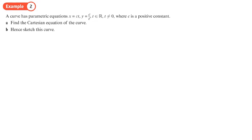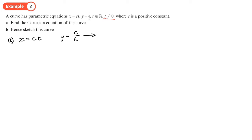A curve has parametric equations x equals ct, y equals c over t, where t can be any real number except t cannot equal 0 — otherwise we would end up dividing by 0 — and c is a positive constant. Find the Cartesian equation of the curve. It's the same method as before: make t the subject of one equation and substitute into the other. We've got x equals ct and y equals c over t. It makes sense to make t the subject of the y part. A little tip: whenever you have an equation like y equals c over t, if you just swap t and y over, you get t equals c over y. That saves a step of multiplying by t and dividing by y.